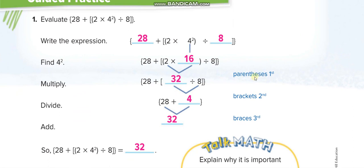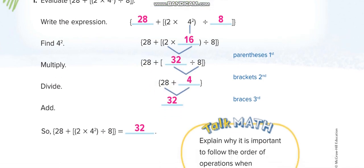Similarly, in this example: first solve the parentheses, which contain an exponent — 4 to the power of 2 equals 4 times 4 equals 16, then 2 times 16 equals 32. Everything else comes down as is. Next, the square bracket: 32 divided by 8 equals 4. Then the braces: 28 plus 4 equals 32.